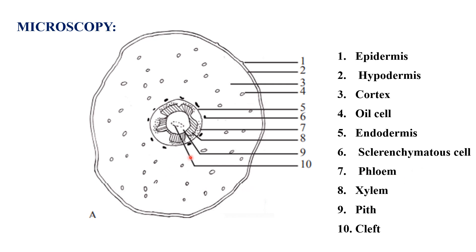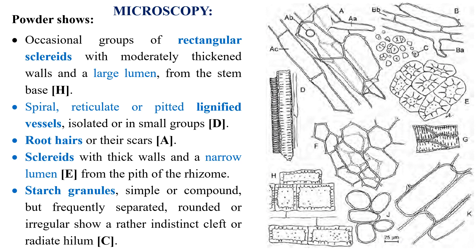In the center of the transverse section we can also characterize an abnormal structure — sclereids present in the center or base region. The powder of valerian root is characterized by the presence of occasional rectangular sclereids with moderately thickened walls, largely from the stem base, as well as pericyclic sclereids from the rhizome, and spiral, reticulate, or pitted lignified xylem vessels.